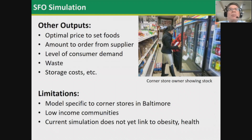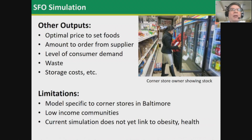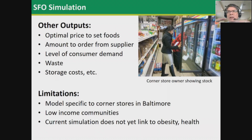There are many other outputs from the simulation, including the optimal price to set foods to achieve maximum profitability, the amount to order from suppliers for optimal sales and least waste, and the level of community consumer demand. The model does have limitations — the parameterization data was collected from consumers and retailers in Baltimore City, so it would take modification to be usable in other settings. The current simulation is also focused on retailer impact and does not yet link to obesity or health outcomes.